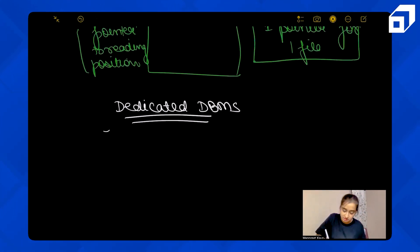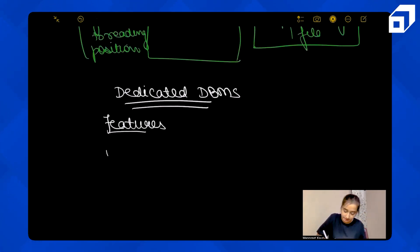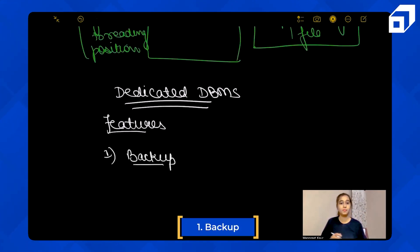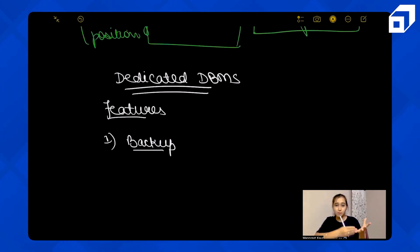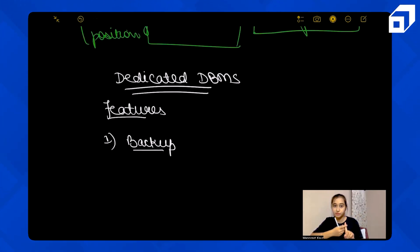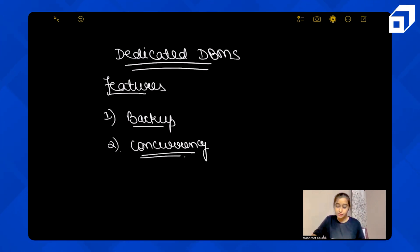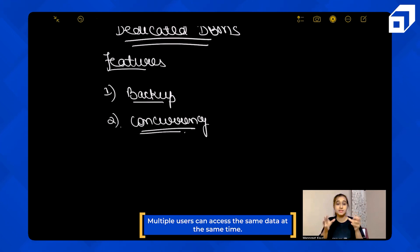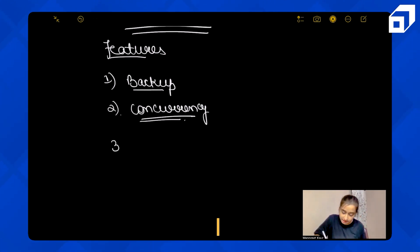What are the features of dedicated DBMS, beyond addressing the cons we discussed? The very first and most important feature is backup. If you lose data, you can regain it because backups are taken at regular intervals — daily, weekly, or monthly. The second important feature is concurrency: dedicated DBMS allows multiple users to access the same data at the same time. We'll look into how that works shortly.